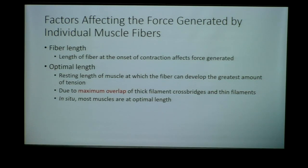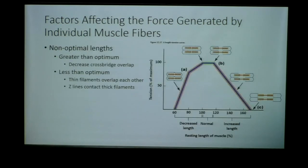In situ — the way muscles are in the body — muscles are at their optimal length. That is why they are stretched across the joint with an insertion point and an origin, to maintain that optimal length. If the muscle were already contracted when we try to shorten it, we would not have the optimum amount of crossbridge cycling and would not generate the maximum force for that muscle.